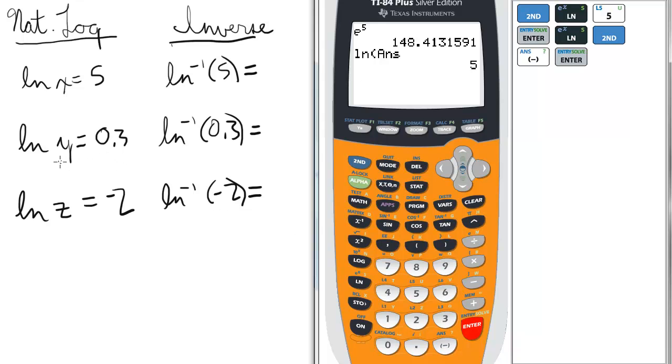Okay, so if we have the natural log of y equals 0.3, in the inverse natural log format, that's ln to the negative 1 of 0.3.